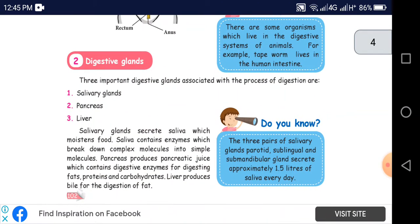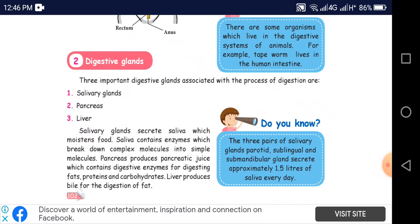There are some organisms that live in the digestive system of animals. For example, tapeworm lives in the human intestine.